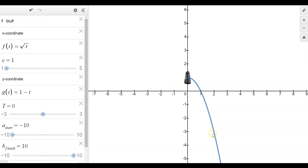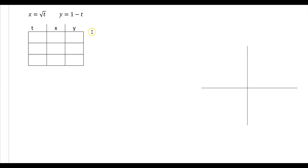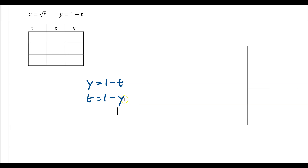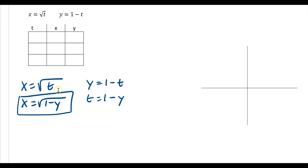Our t value has to be greater than 0, which is going to affect the x and y values. The graph here is a square root, so again we're working with a linear equation. We're going to take y equals 1 minus t and solve for t. Basically, we're going to switch the y and the t — this would be t equals 1 minus y, because we add the t over and subtract the y over. And there's our t. Now if we plug that in, x equals square root of t becomes x equals square root of 1 minus y. We now have our Cartesian equation.